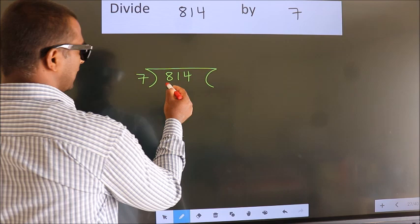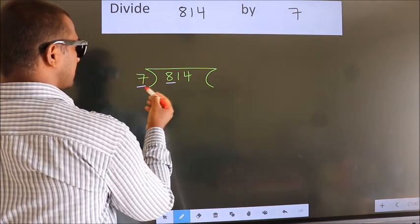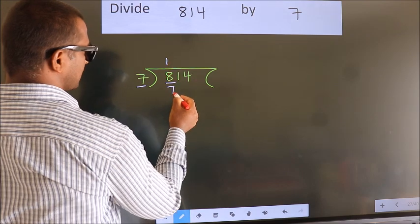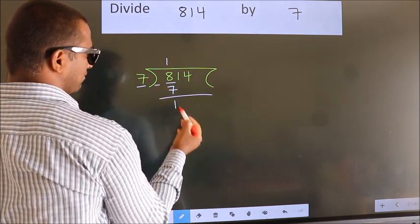Here we have 8, here 7. A number close to 8 in 7 table is 7 once 7. Now we should subtract. We get 1.